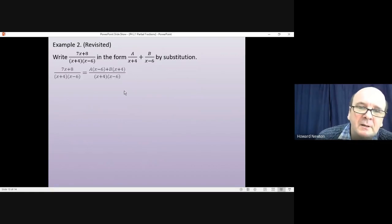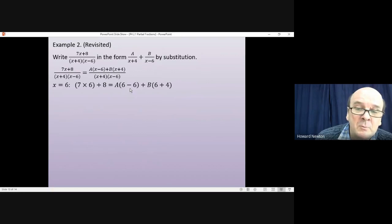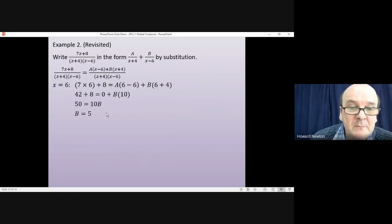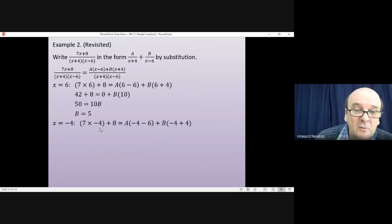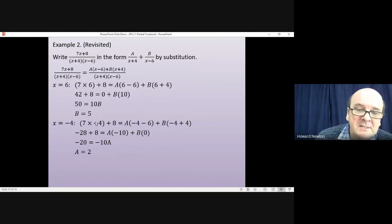Substituting x=6: the left gives 42+8=50, and we chose 6 to make the a bracket zero, leaving 50 = 10b, so b=5. Then substituting x=−4: the left gives −28+8=−20, and the b bracket is zero, leaving −20 = −10a, so a=2. Very quickly, substitution gives a=2, b=5 — the same answer as before.